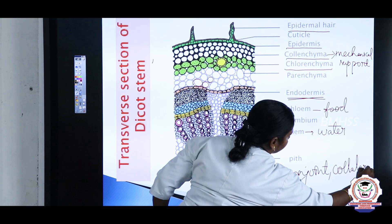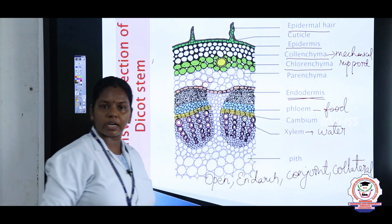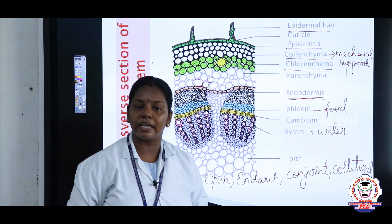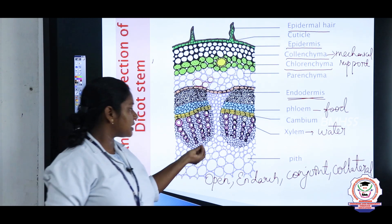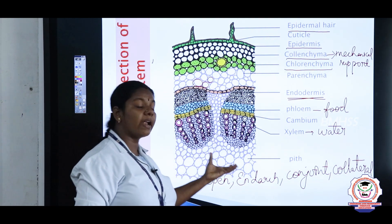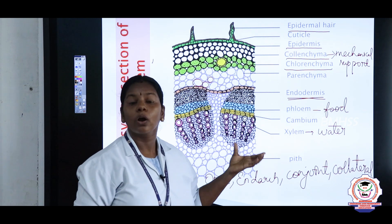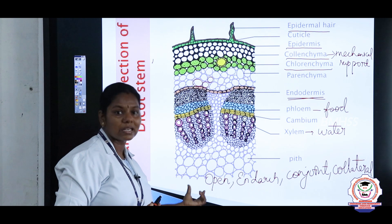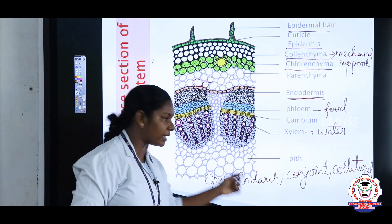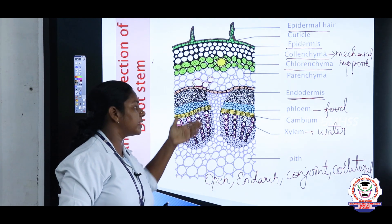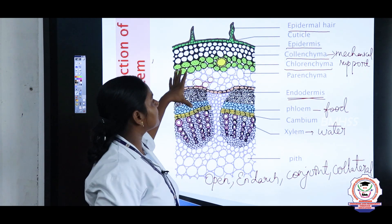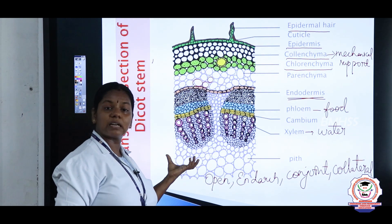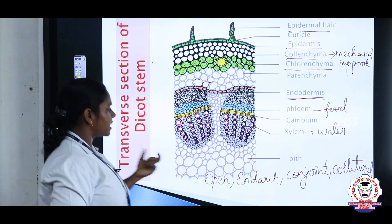This is an important exam question: identify the characters of the dicot stem vascular bundle. The answer is: the vascular bundle is open, endarch, conjoint, and collateral. It is called open because cambium is present. It is called endarch because proto xylem is towards the center and meta xylem towards the periphery. An example of a dicot stem is the sunflower stem.